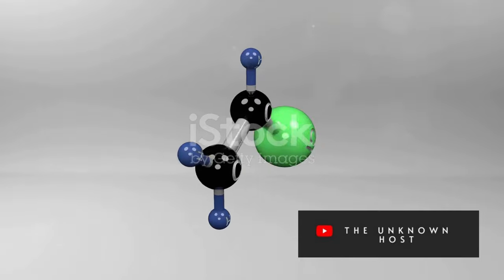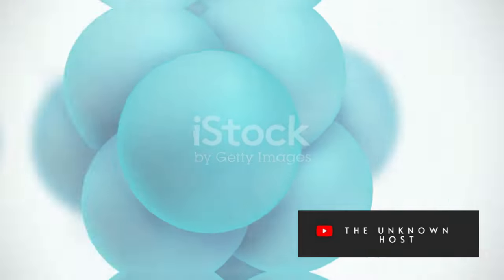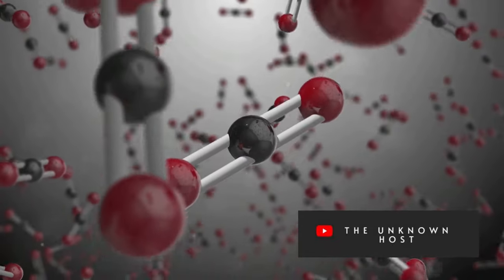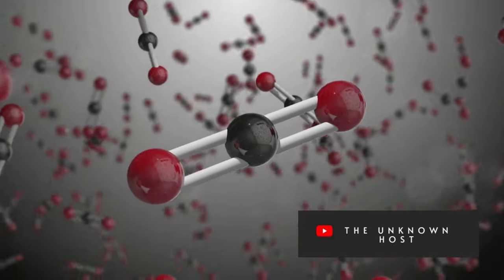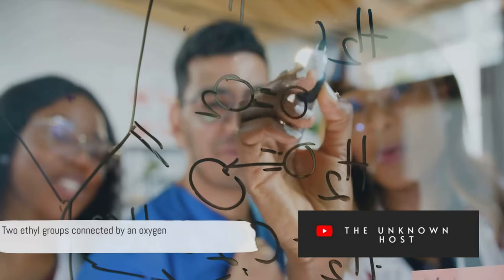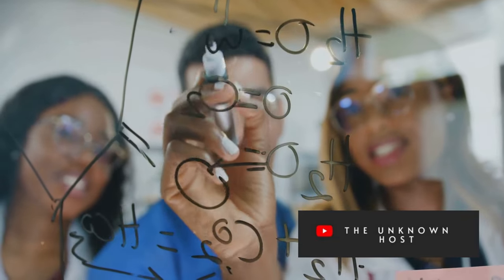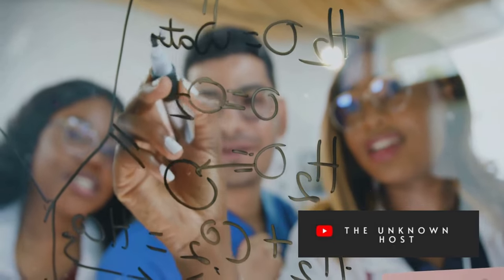Ethers consist of two organic groups connected by an oxygen atom, R-O-R. When naming ethers, now let's name diethyl ether, which has two ethyl groups connected by an oxygen atom. Can you provide its IUPAC name?